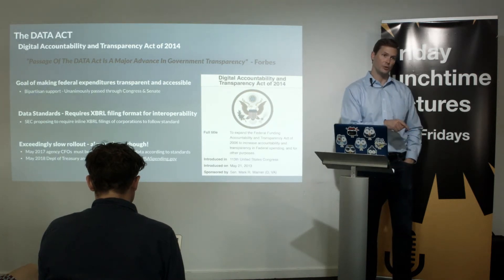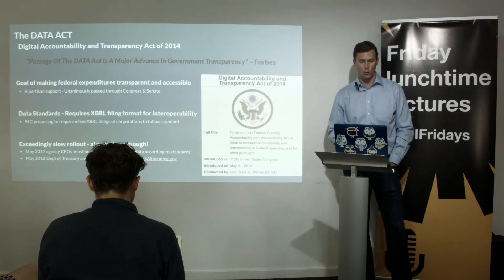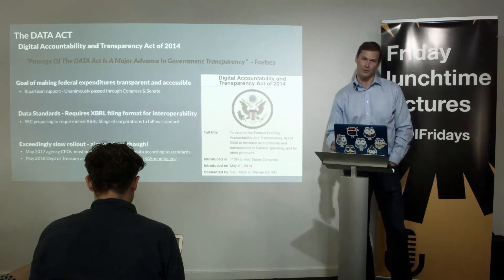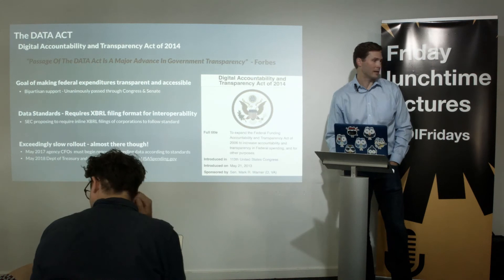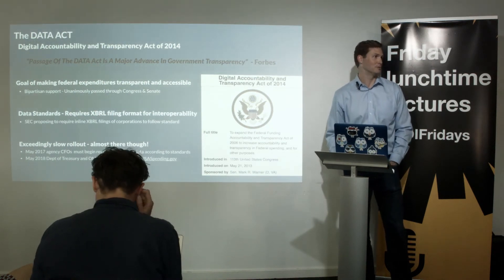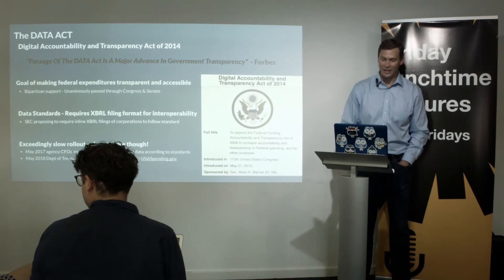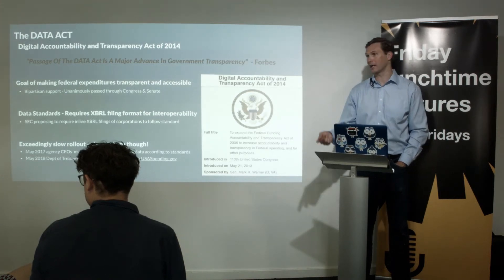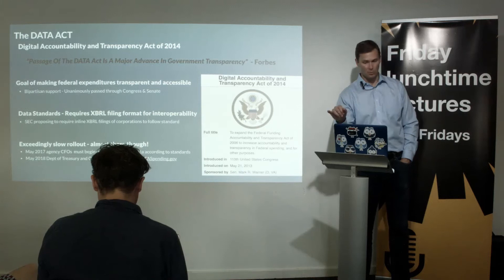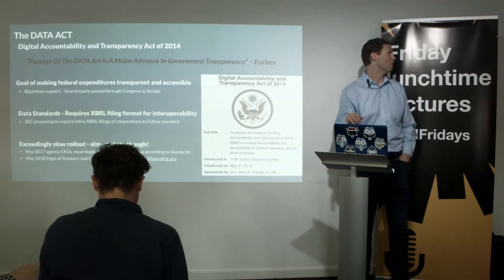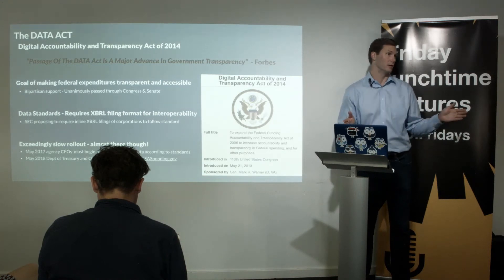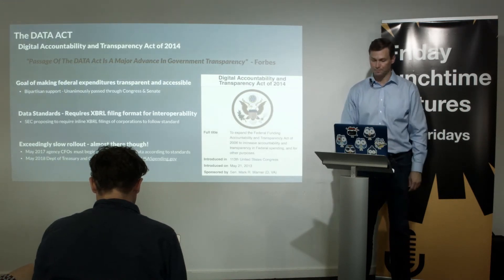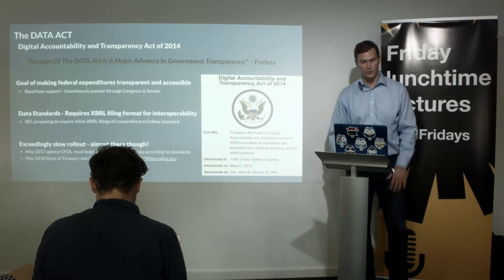Just last month in May 2017, we hit the first major milestone: all agency CFOs needed to begin reporting their financial data according to those XBRL standards, and most of them did. A few missed the deadline and were publicly shamed. A year from now is the second major milestone: all that data gets published on USAspending.gov for anyone in the world to access, with wonderful APIs and a full year of data from all agencies.